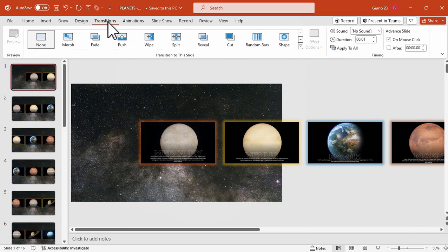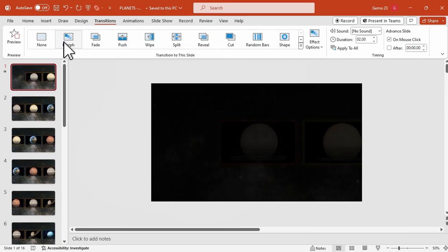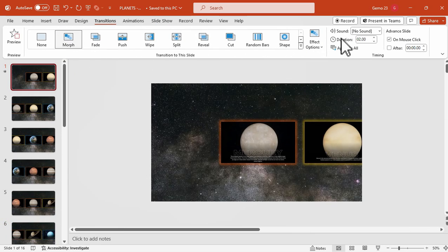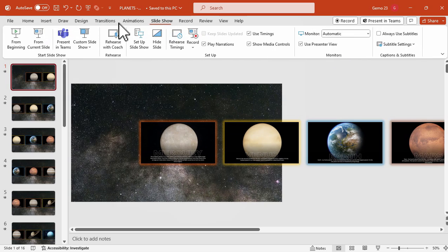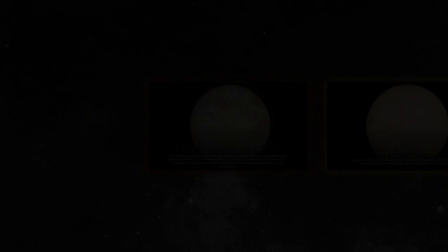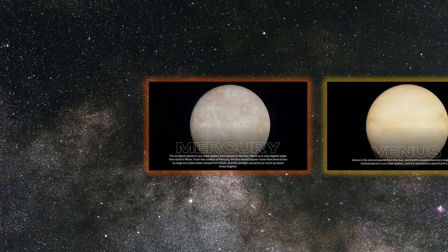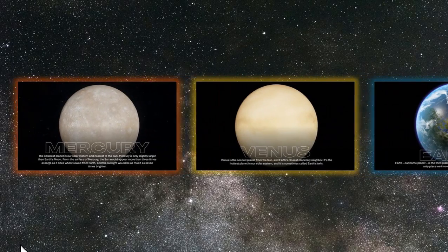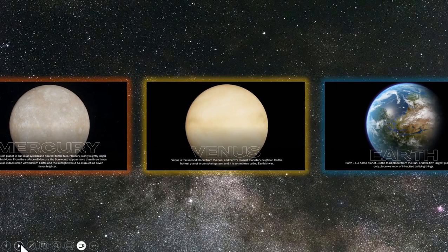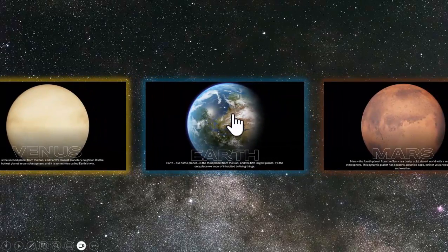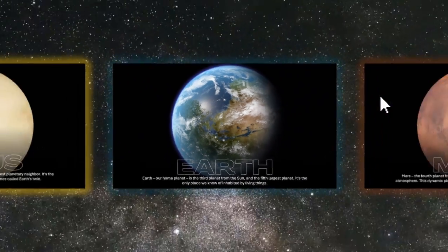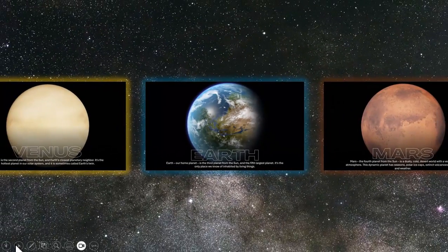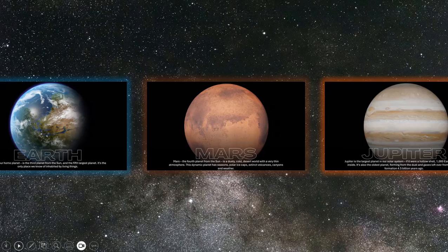To achieve smooth animation for the carousel effect, go back to the first slide, go to the Transition tab, click on Morph transition, and adjust the duration to 1.75 seconds. Make sure to apply it to all slides. Now the carousel effect animation moves smoothly — clicking a slide zooms in, and clicking again zooms out.